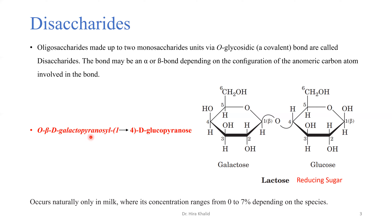So the first part is 'beta-D-galacto' because this is a galactose monosaccharide, and we write 'pyranose' to indicate this is a six-membered ring structure. Whenever a carbohydrate cyclizes from a linear form to a six-membered ring through hemiacetal or hemiketal formation, that is named a pyranose.